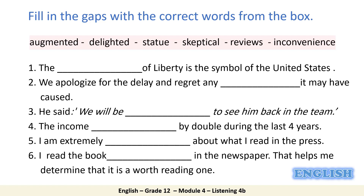Now let's correct. Number one: the ___ of liberty is the symbol of the United States. In the United States, there is one monument that shows the liberty of this country. The answer is: statue of liberty. Number two: we apologize for the delay and regret any ___ it may have caused. The synonym to the missing word is disturbance or trouble. The answer is: inconvenience.